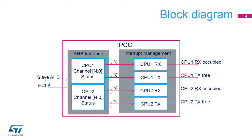Each channel has a single status flag to indicate the send status for one CPU and the receive status for the other CPU. Each CPU has its own status mask and set or clear register bit for each channel. The register area is split into two regions, one per CPU. Each region contains the registers associated with the CPU, preventing read-modify-write access conflicts.